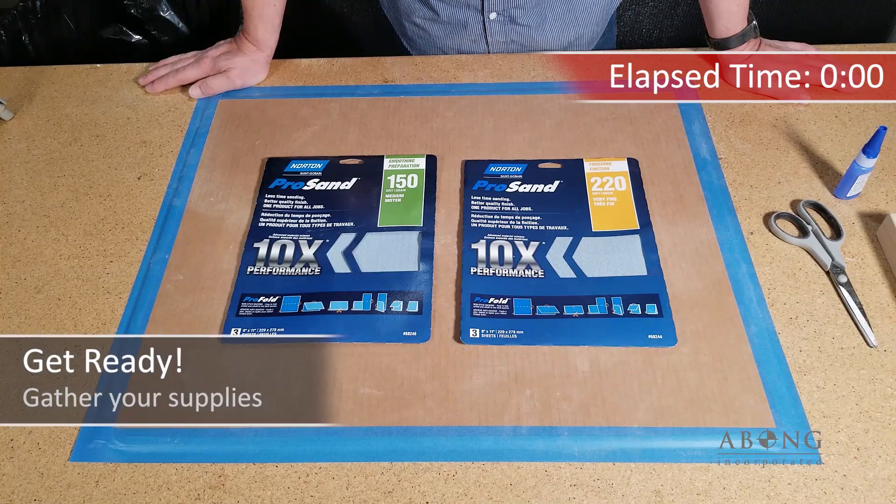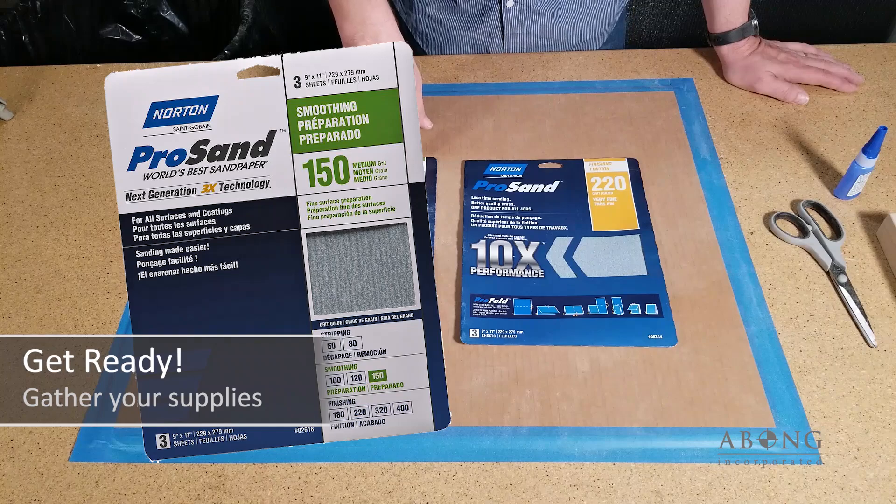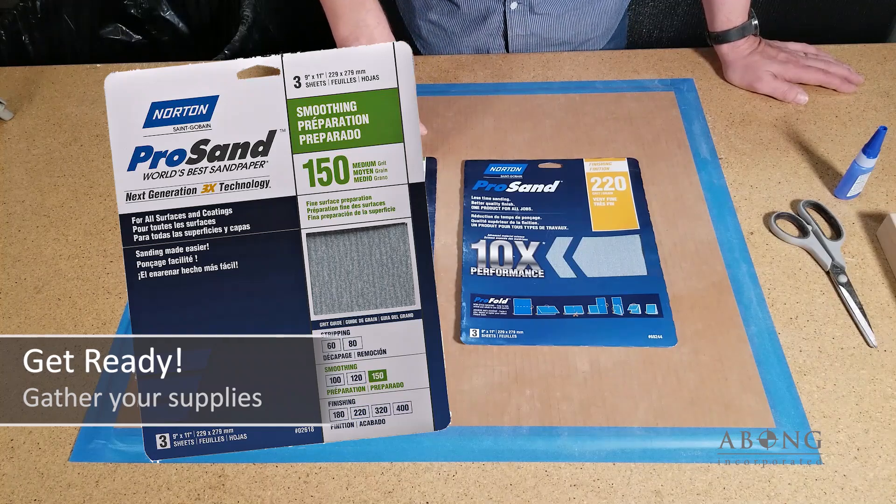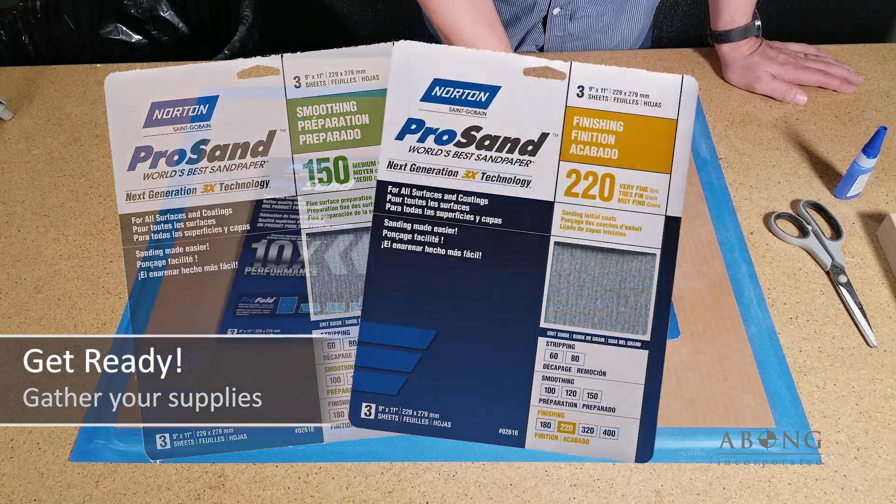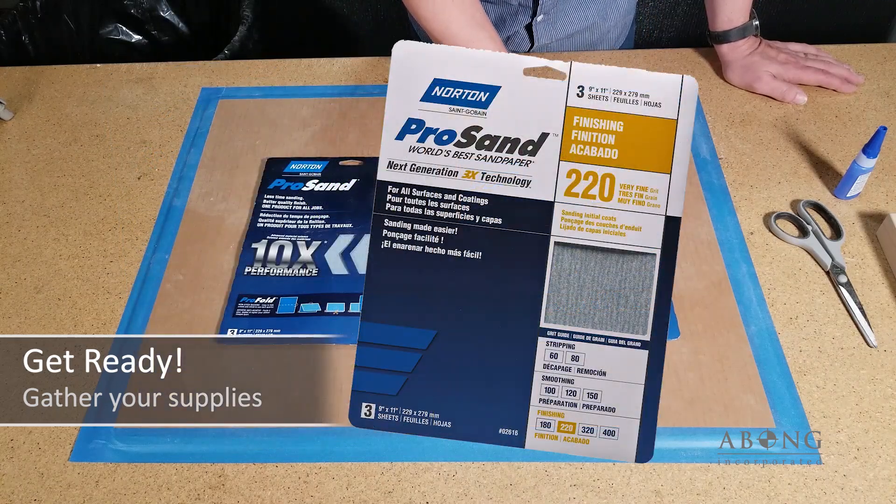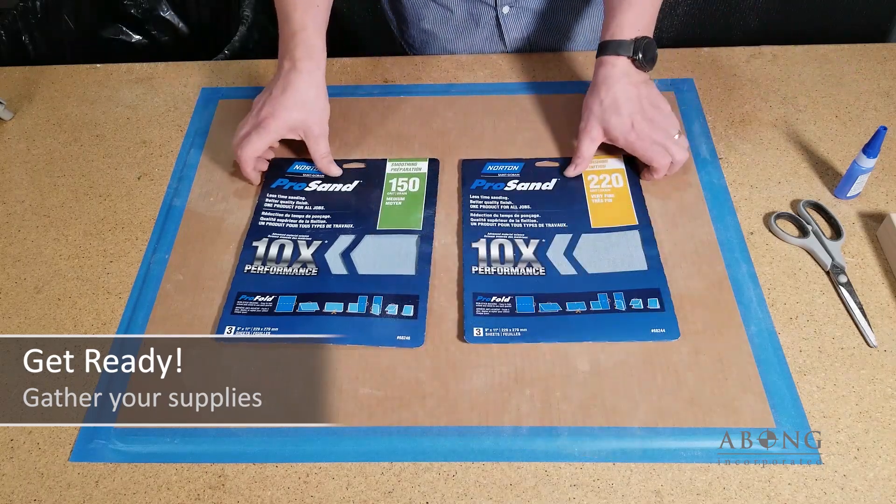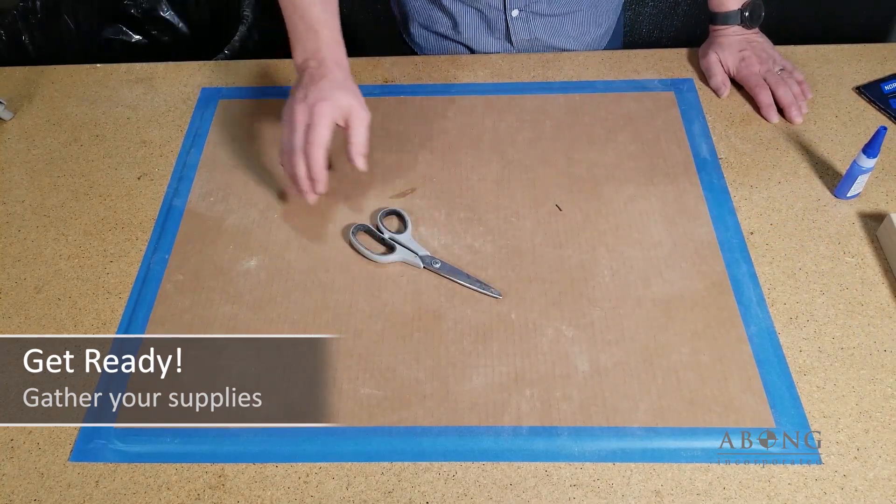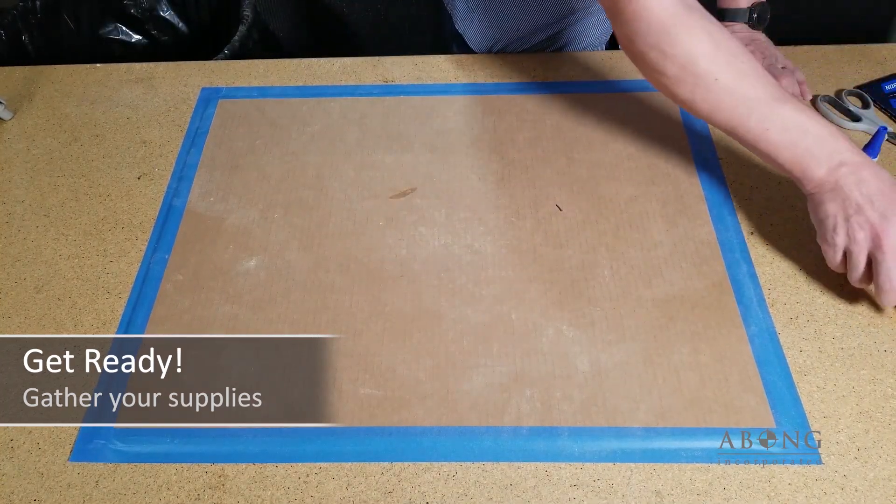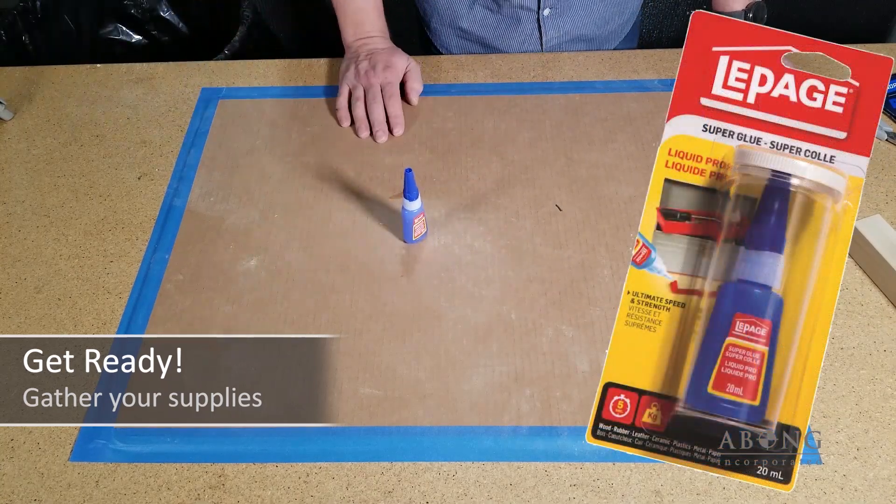So we'll get our supplies together. We're going to use 150 grit sandpaper to remove all the laser residue and any dirt off the boards, and then after that we're going to go ahead and use 220 grit and that's to put a nice fine finish on the product so it's nice to the touch and looks good. In addition to the sandpaper you're going to need a pair of scissors, just any old scissors will do, and some glue. I'm using Lepage's super glue.